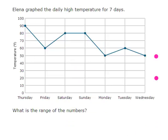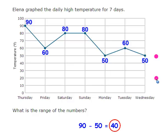Elena graphed the daily high temperatures for 7 days. What is the range of the numbers? I would put the value above each point. So this point is 90, this point is 60, 80, 80 as you can see. And the range is taking the largest number and subtracting the smallest. The largest number is 90 and the smallest number on this graph is 50.